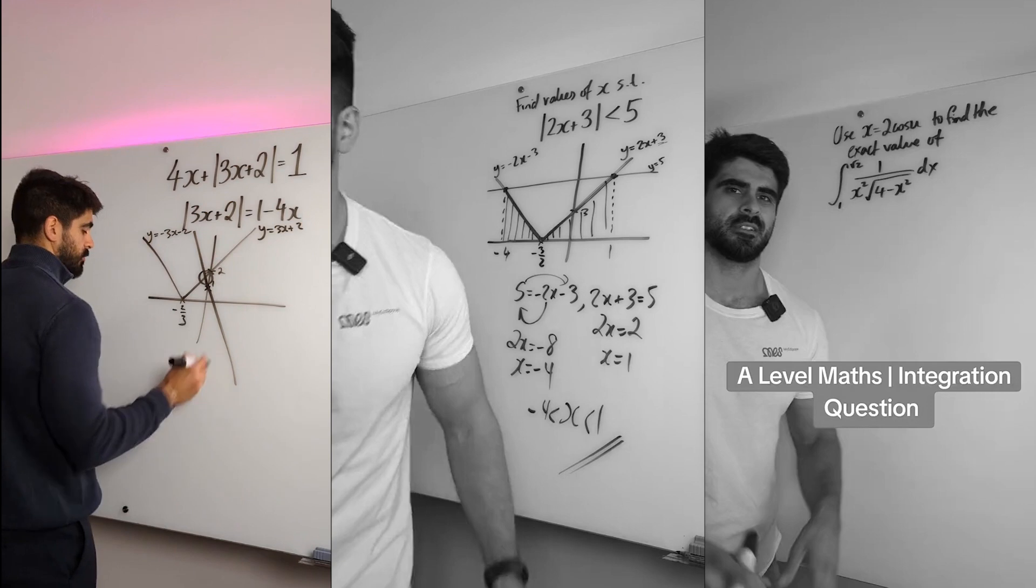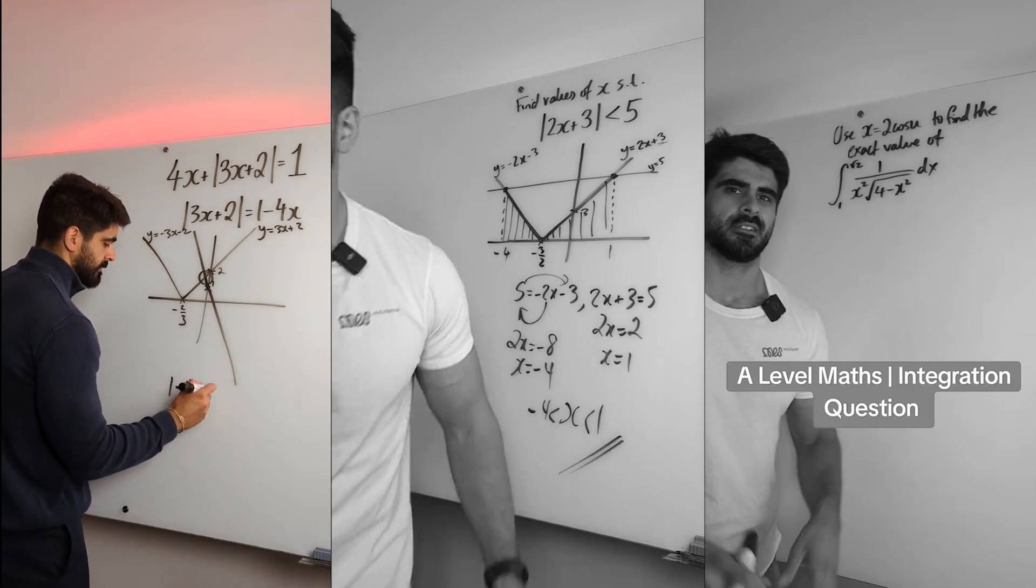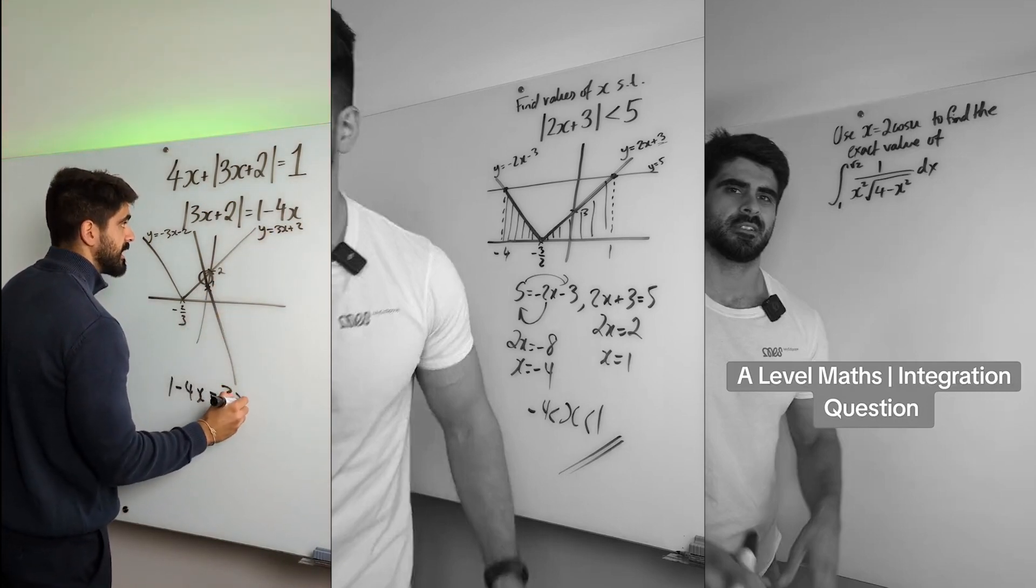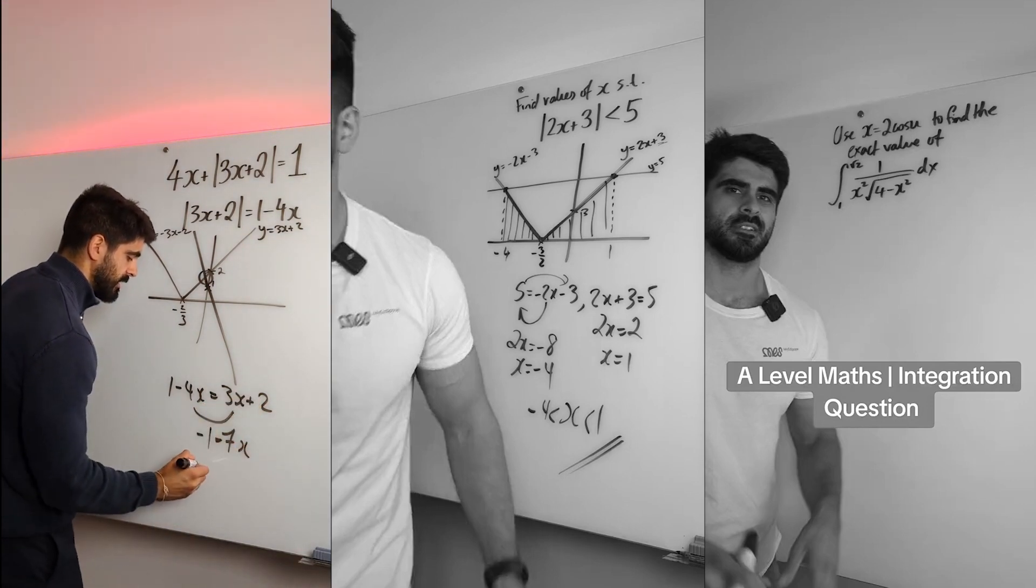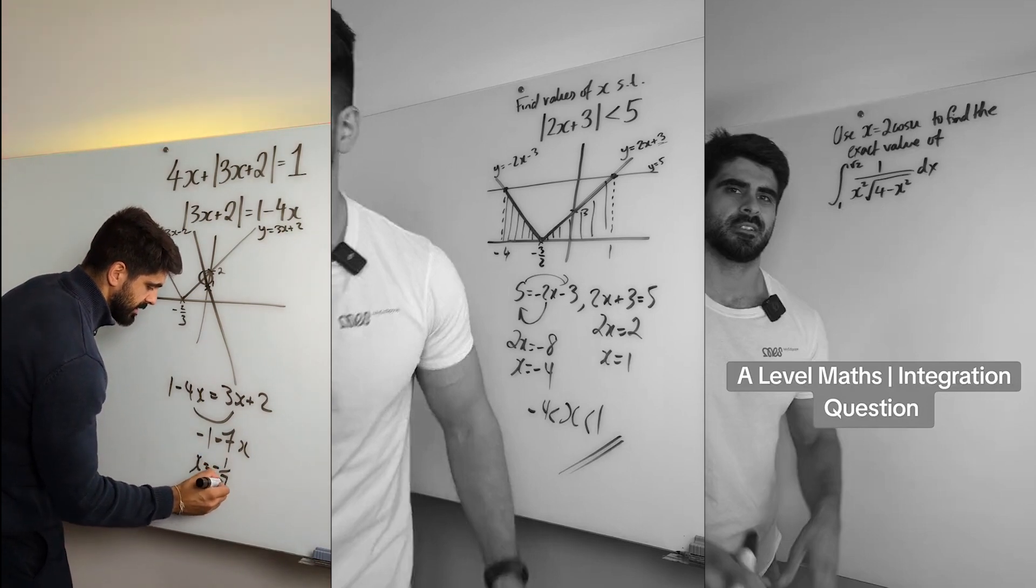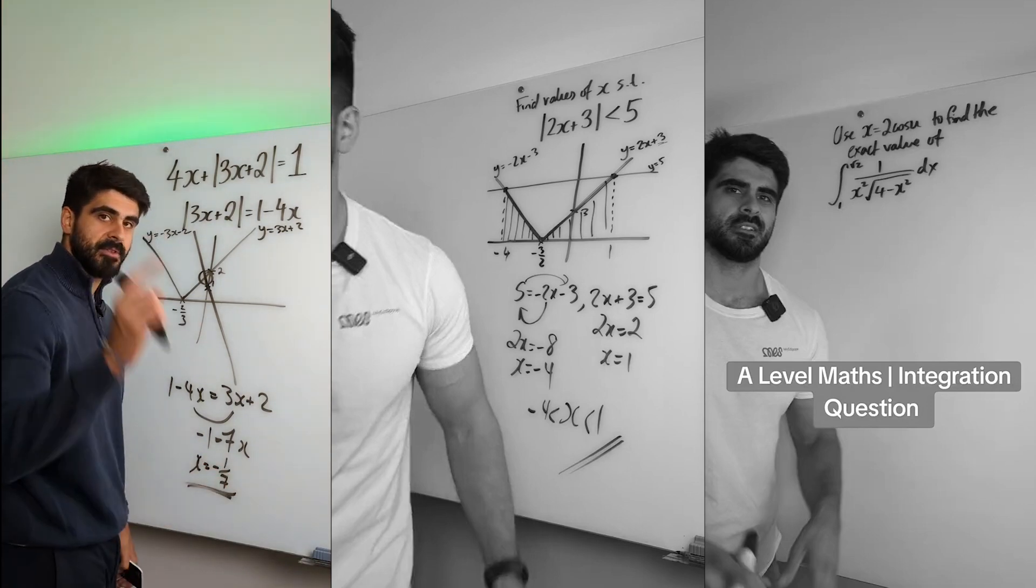So we're only solving when 1 minus 4x meets 3x plus 2. So this comes here to make 7x. The 2 comes over to make minus 1. Divide by 7, x is only minus 1 over 7. Nice.